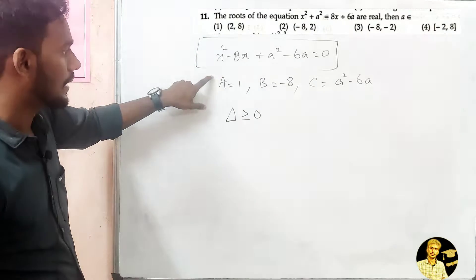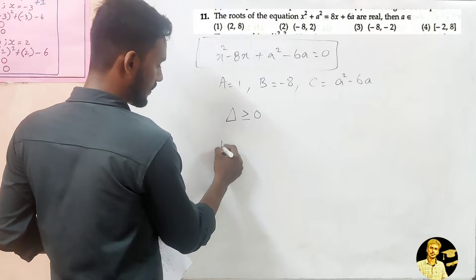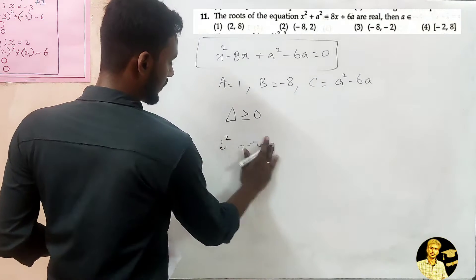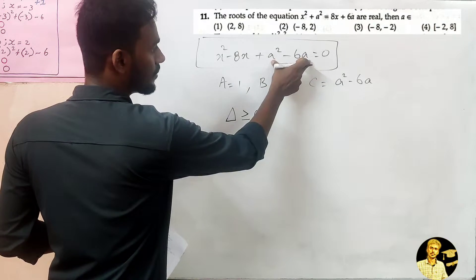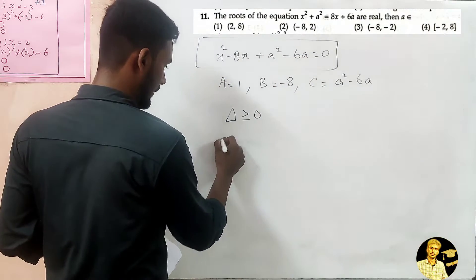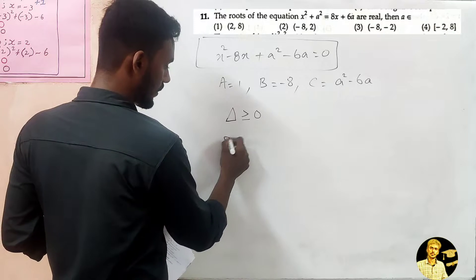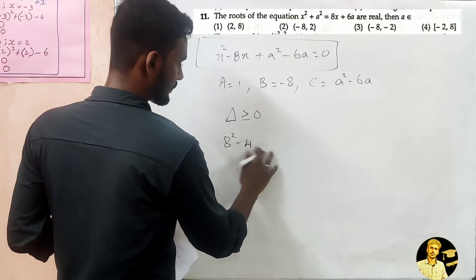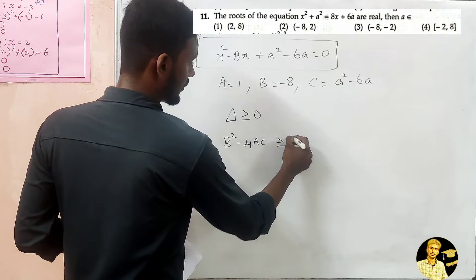We substitute the values into the discriminant formula b² - 4ac. Note that here 'a' in the equation is a small letter, while A in the discriminant formula is a capital letter. The condition for real roots is b² - 4ac ≥ 0.